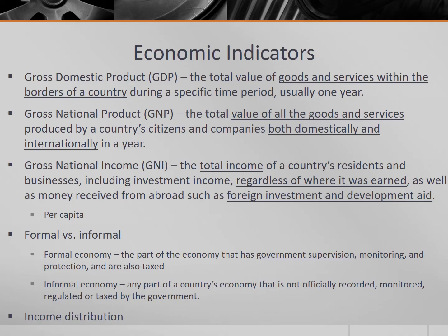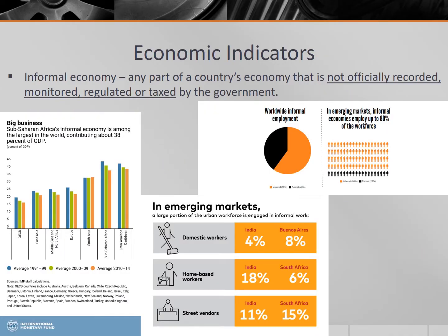By comparison, the informal economy is any part of a country's economy that is not officially recorded, monitored, regulated, or taxed by the government. The informal economy includes many different activities from babysitting and being a street vendor to the illegal drug trade. It often operates in cash with irregular or uneven income, and the workforce is often comprised of people with little education or formal training. It can be in urban or rural areas, but gender discrimination remains an issue as women often make up the largest portion of the informal sector workforce in developing countries.